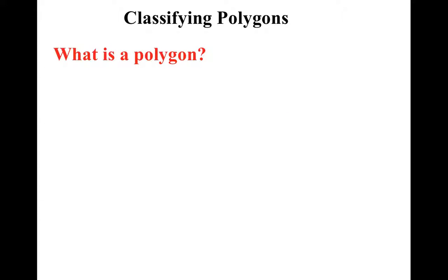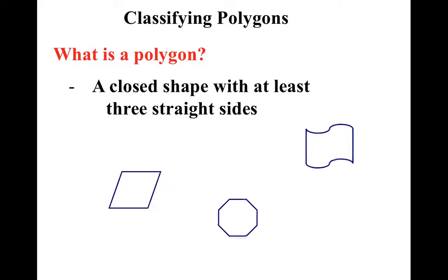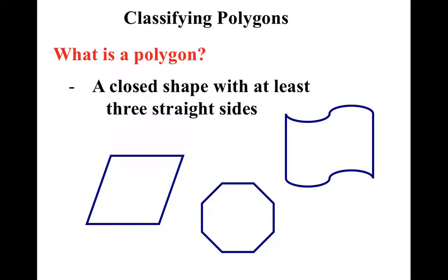So let's talk about a polygon. A polygon is a closed shape with at least three straight sides. Can you pick the one that's not a polygon? You're right — it doesn't have straight sides.